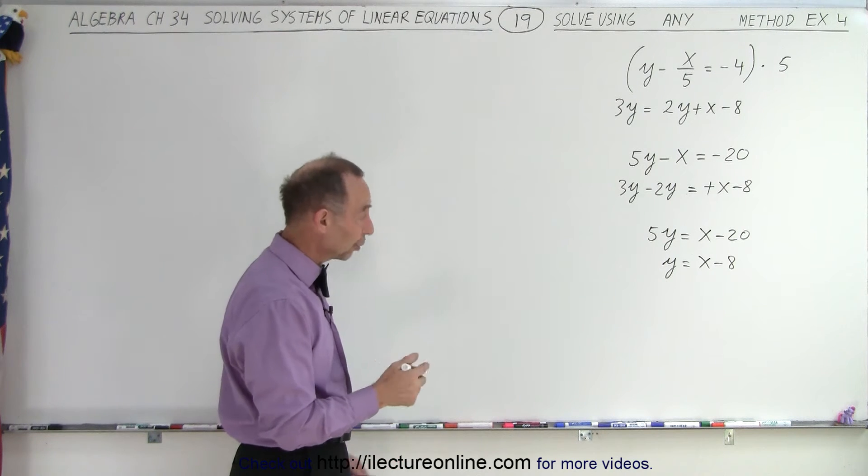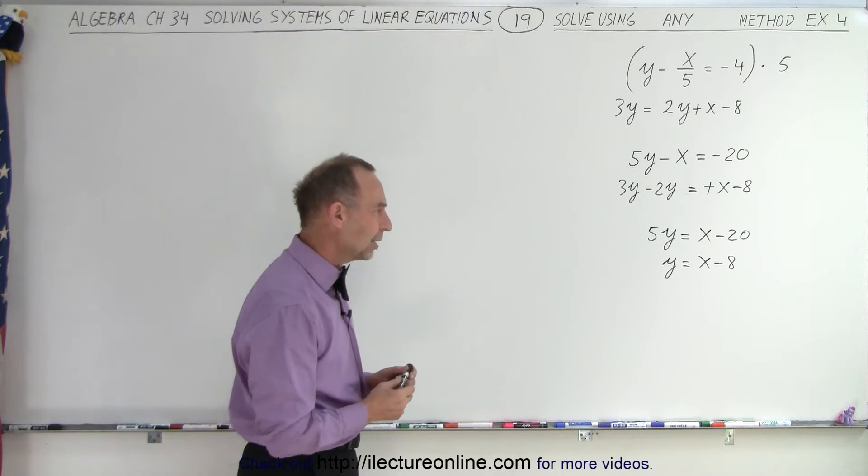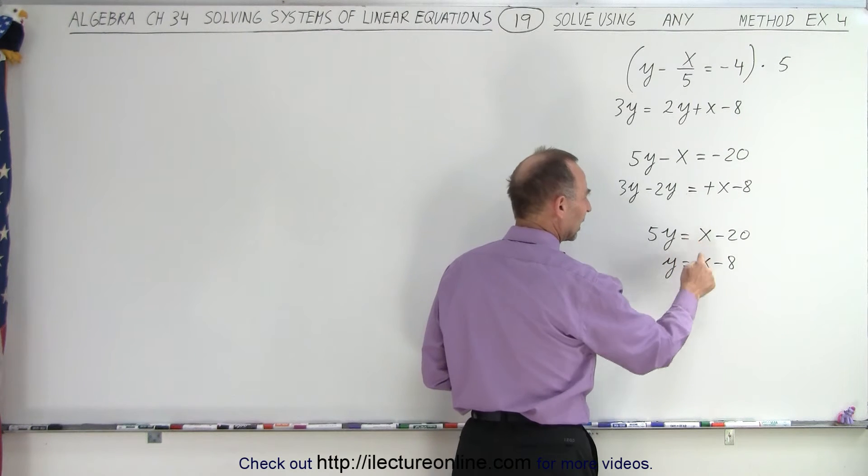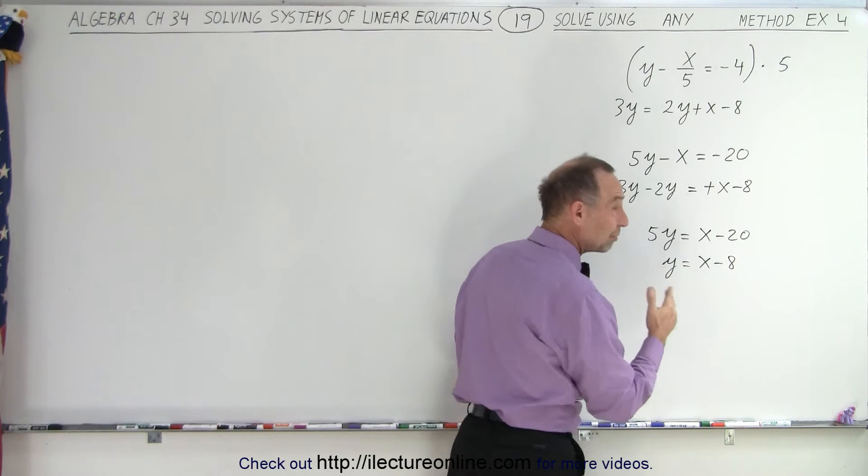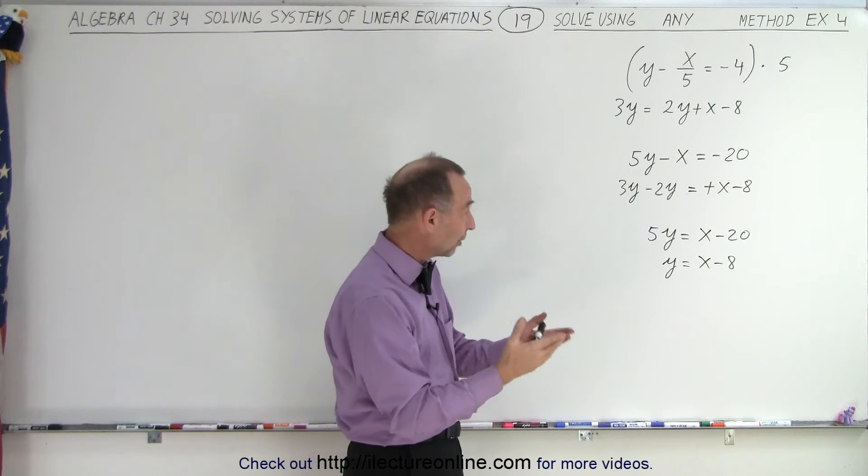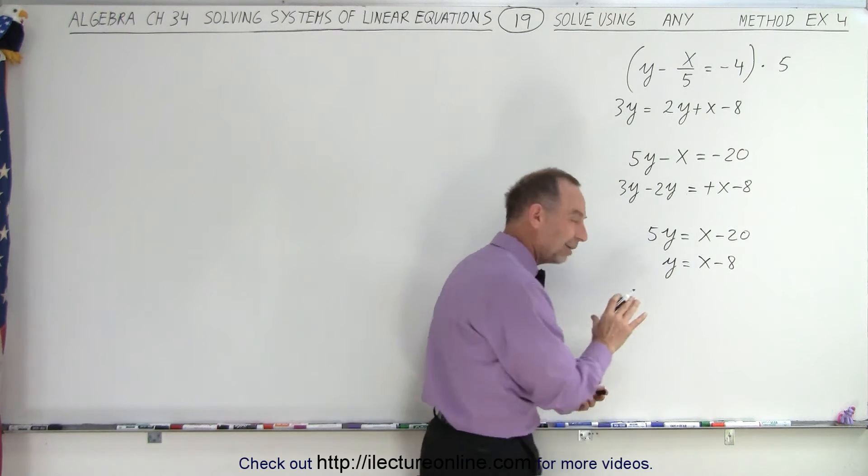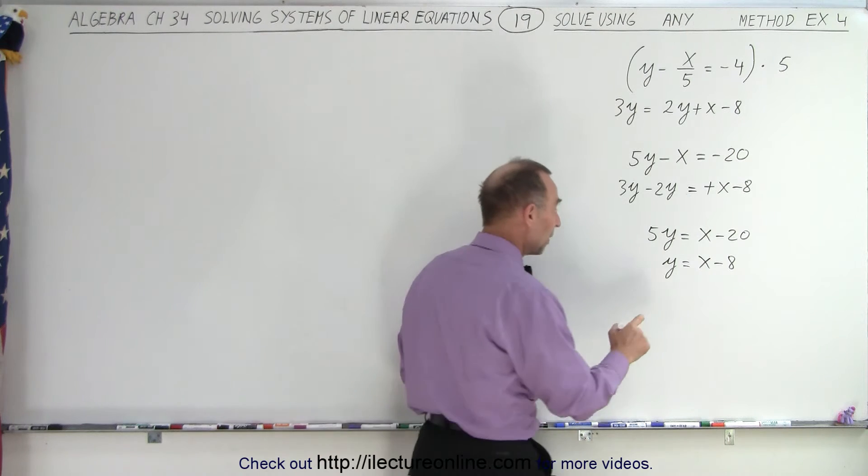Now I'm ready to try to pick a good method to solve that, and notice, I end up with an x over here and an x over there. They already have the same numerical coefficient. All I have to do is make one of them negative, and I can add the two equations. Then I eliminate x, so I'm going to use the method of elimination by multiplying this equation by negative 1.